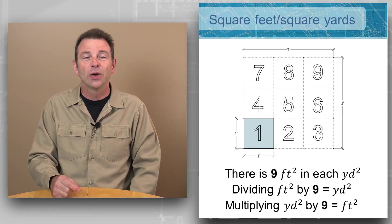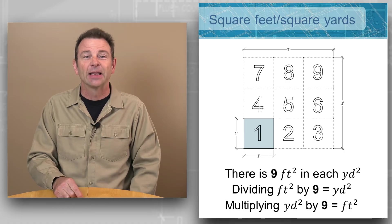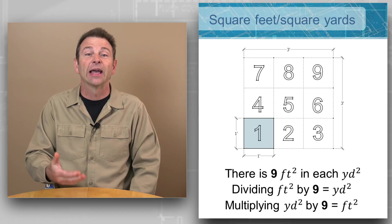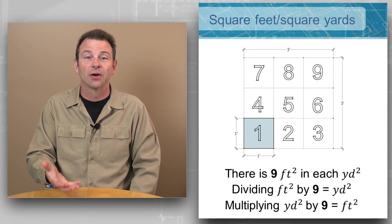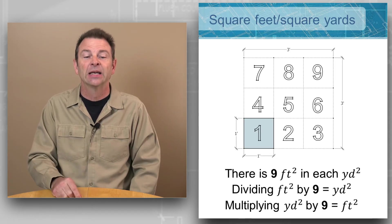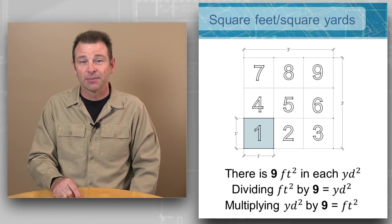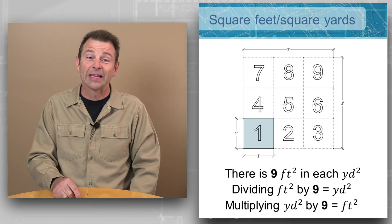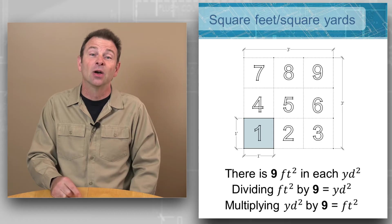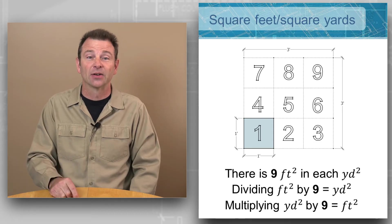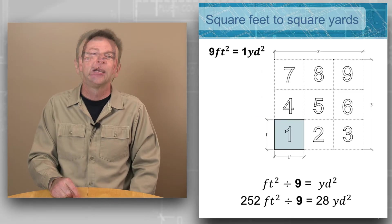So if we divide our square feet by that factor of nine, we're going to arrive at a square yard measurement. If we multiply our square yards by that factor of nine, we'll arrive at our square feet.